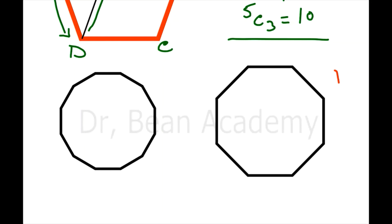Before ending, here are two practice questions. Suppose the polygon has 8 sides, or suppose it has 12 sides. Calculate separately for both: how many diagonals can you draw, and how many triangles can you form from each polygon?